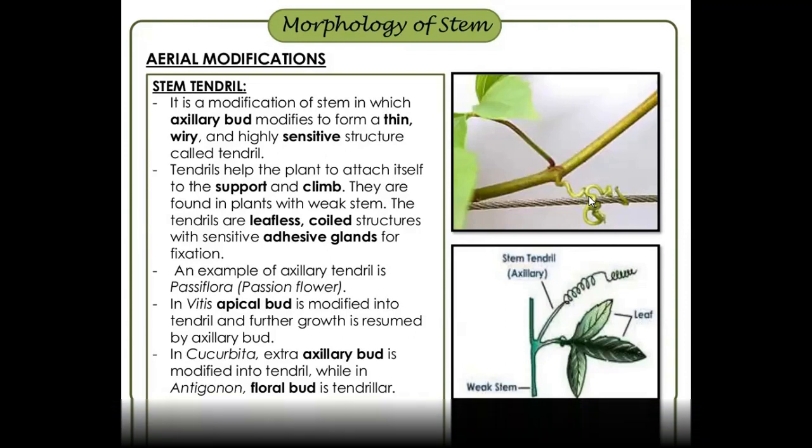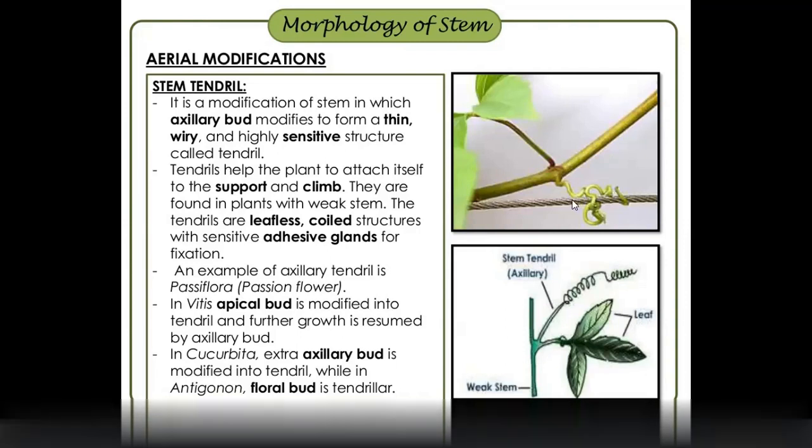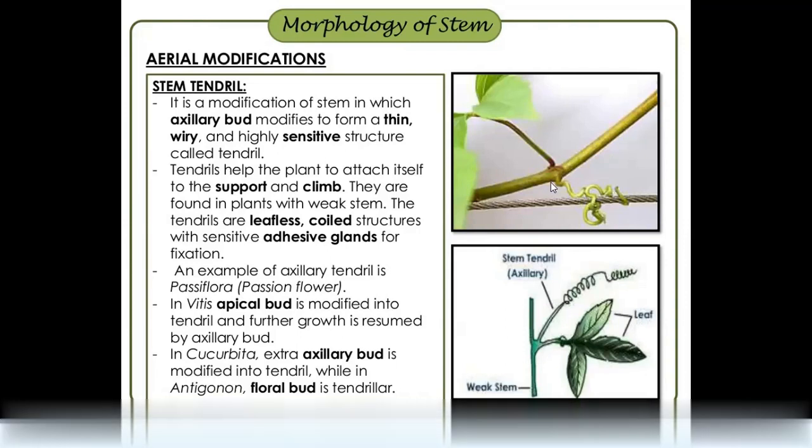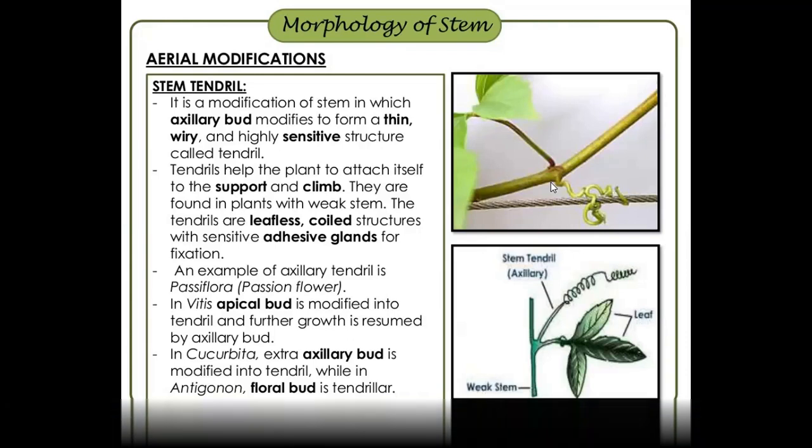There are adhesive glands and stickers. For example, Passiflora — passion flower. The apical bud grows slowly. In Cucurbita there are tendrils.